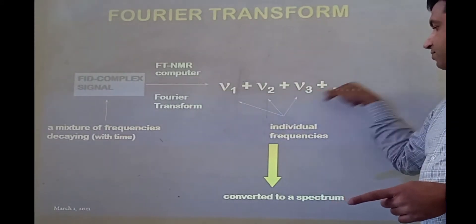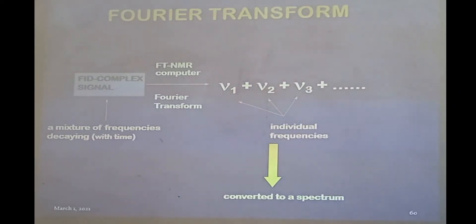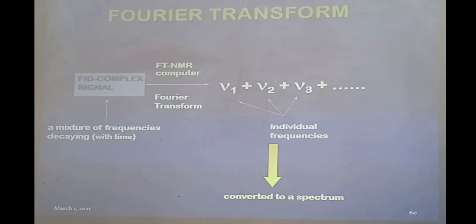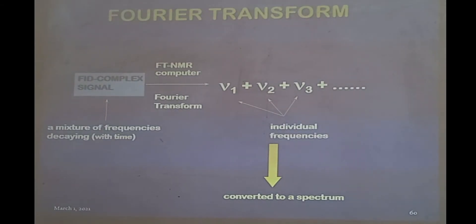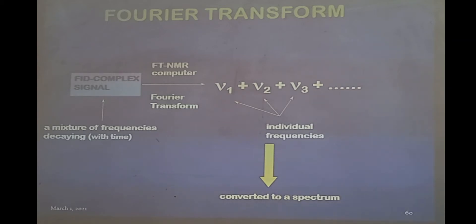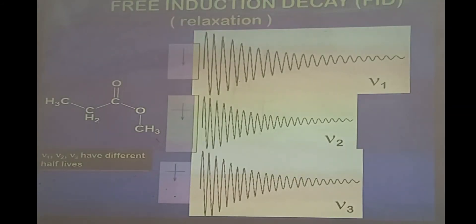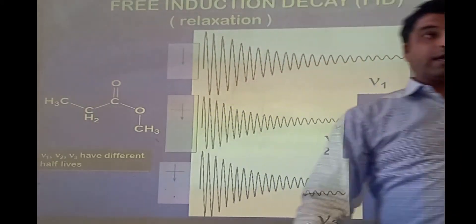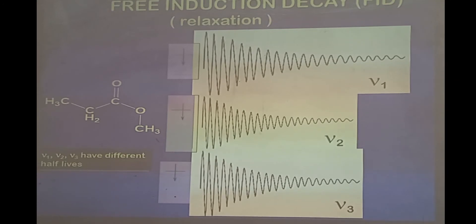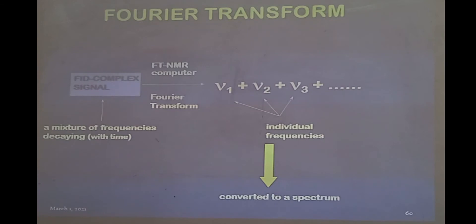Fourier transform separates out all the frequencies — μ1, μ2, μ3, or however many exist in any molecule — and converts them into a frequency domain spectrum. So from a time domain signal we go towards a frequency domain signal. That frequency domain spectrum will have all the frequencies separated, unlike the complex FID signal. That is why you see separate signals for each of the different types of hydrogens. In this molecule you can expect three signals for the proton, because Fourier transformation has separated out all these frequencies.